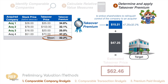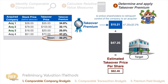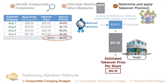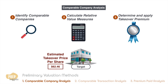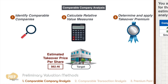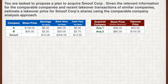Adding the takeover premium to the estimated stock value, the estimated takeover price per share for the target company is therefore $62.46. As you can see, the comparable company approach is not too difficult in practice — the hardest parts are finding comparable companies and recent takeovers of similar companies, while the calculations are straightforward. Let's have a quick exercise.